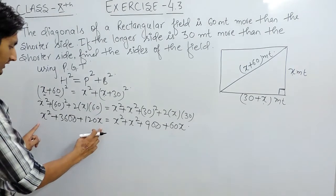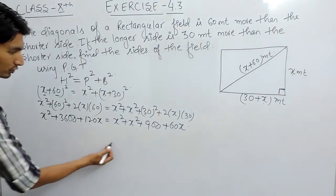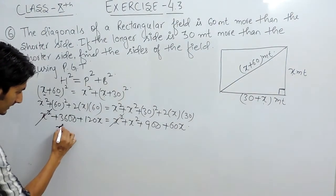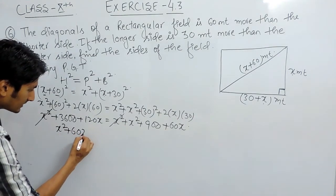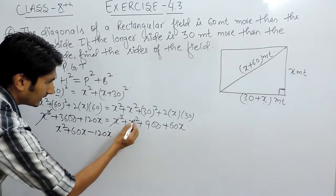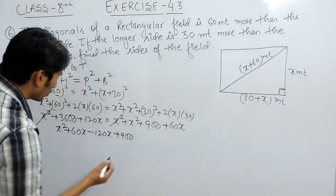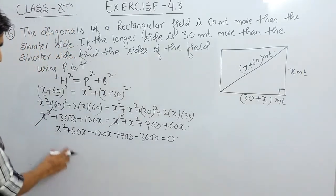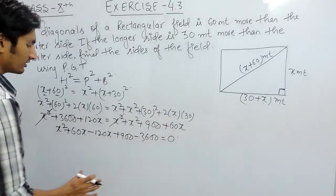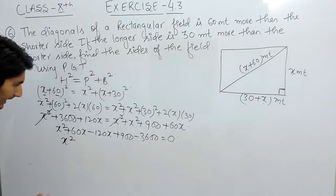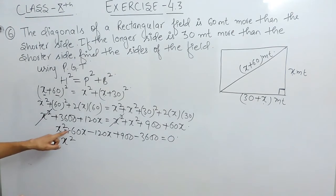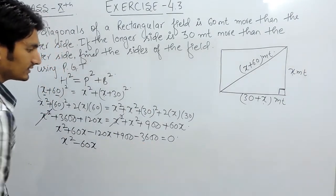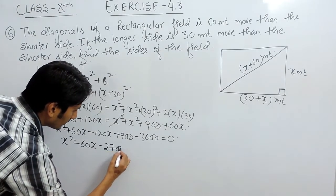Now we shift all terms to the right hand side. The negative x squared and positive x squared cancel out. Shifting terms gives: x squared, then 60x minus 120x gives minus 60x, plus 900, and minus 3600, all equals 0. So we have x squared minus 60x minus 2700 equals 0 as our standard quadratic equation.